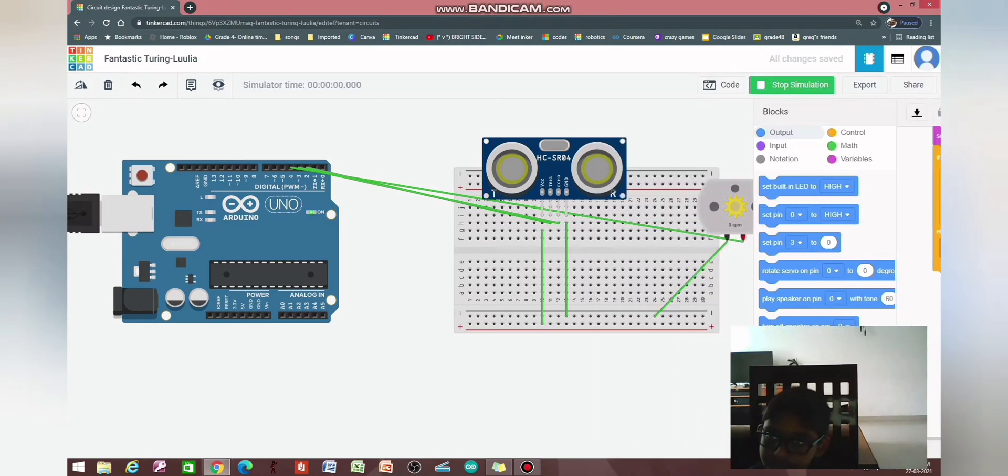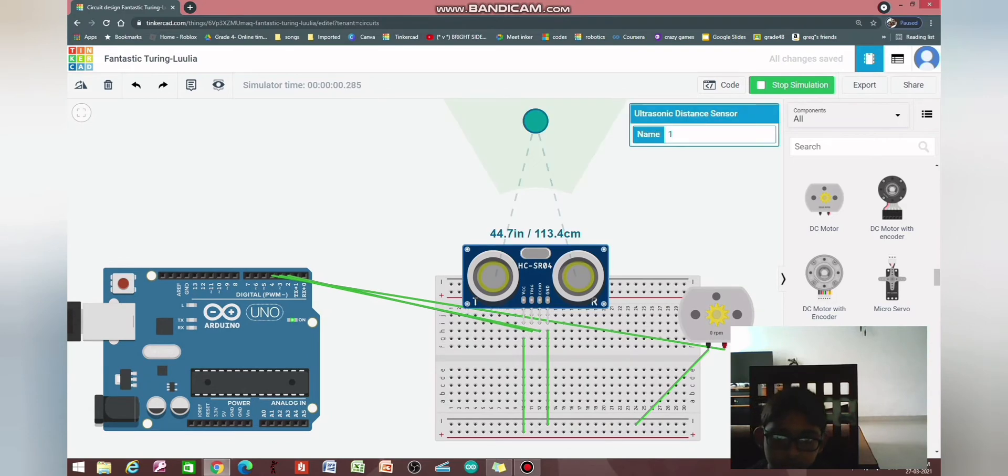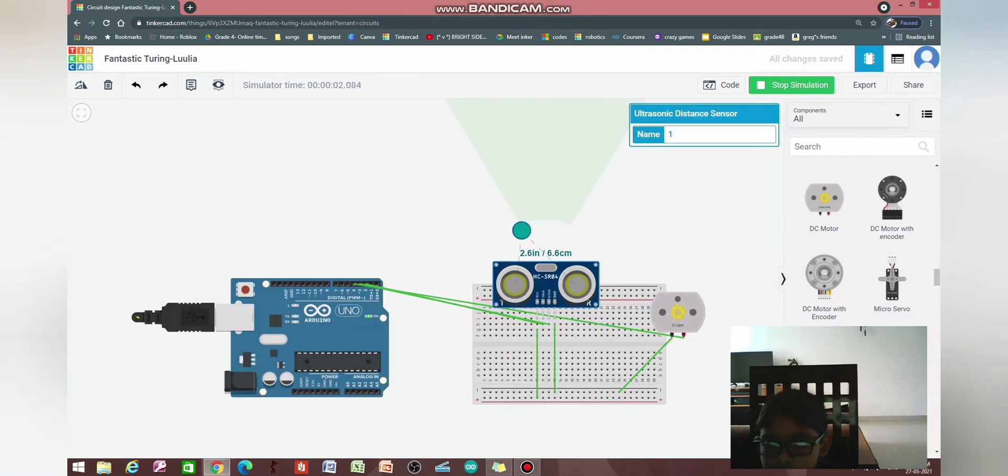Then, set pin 4 to high, which means pin 4 would be on, which is the pin of the motor. Pin 4 to low, that means pin 4 won't be on. Start simulation. So, if you, 6 centimeters, see, the motor is moving. So, in this case, the pump is pumping water.